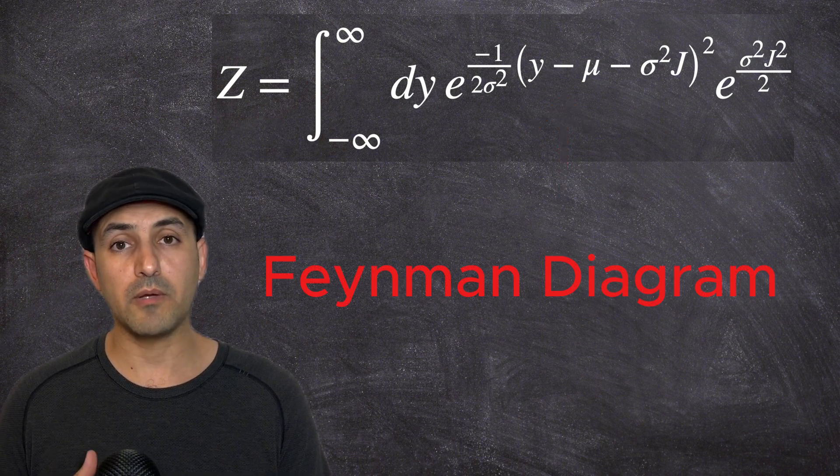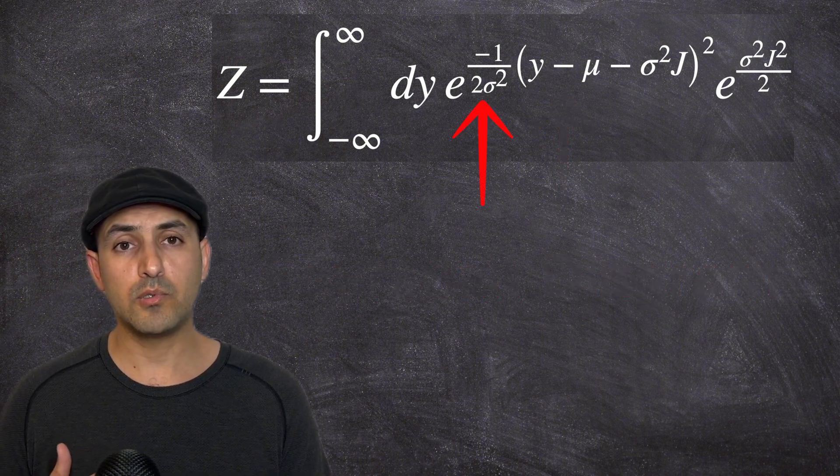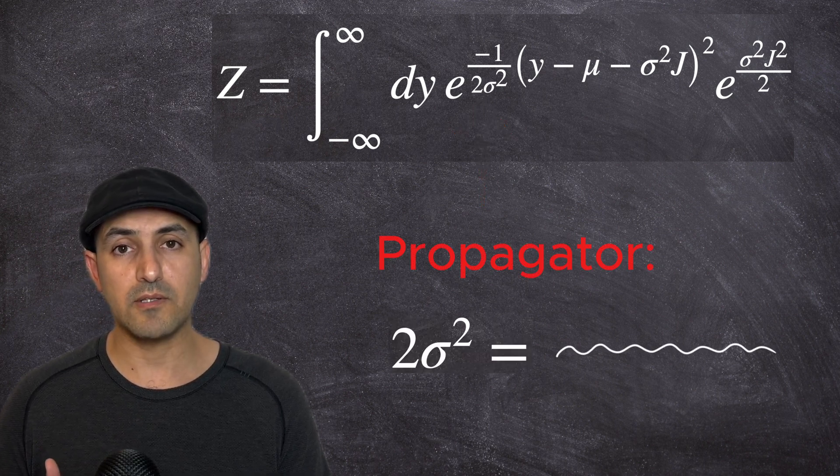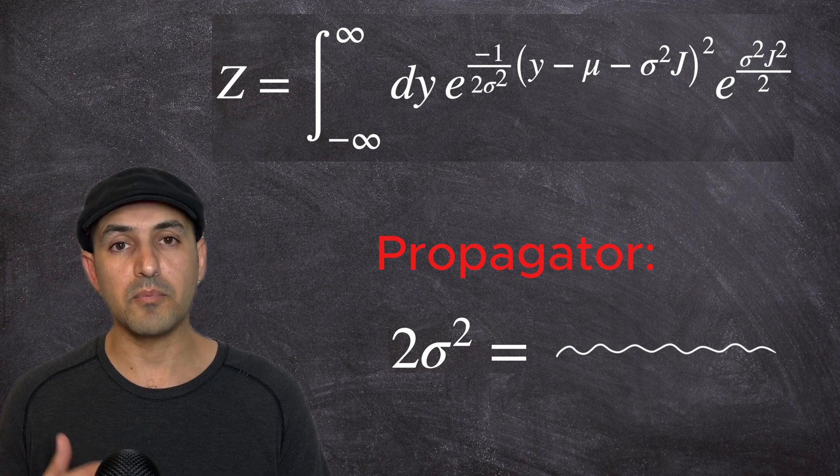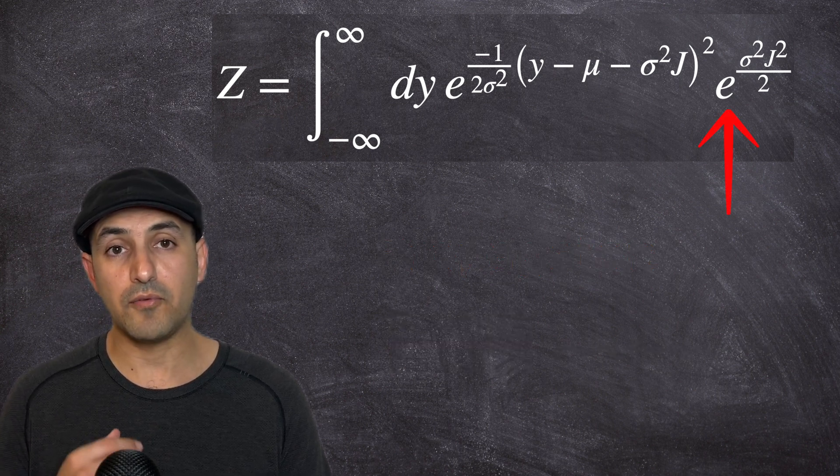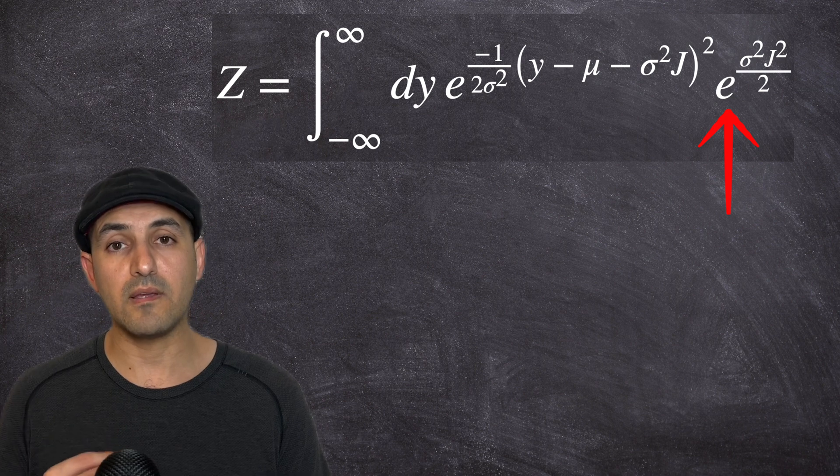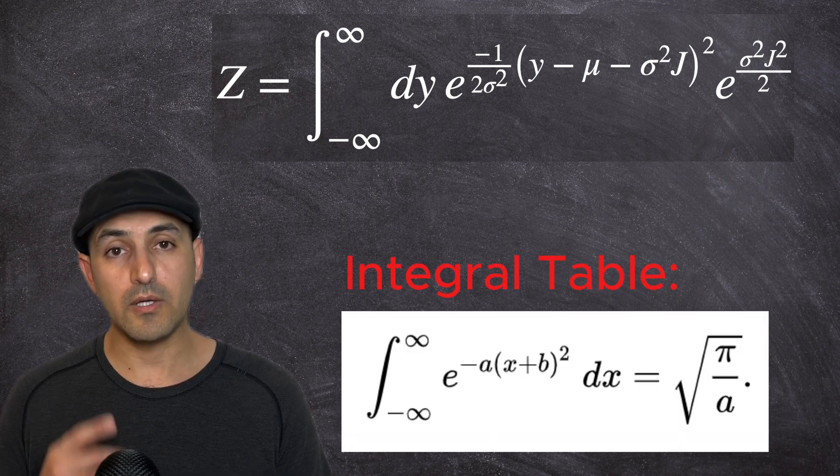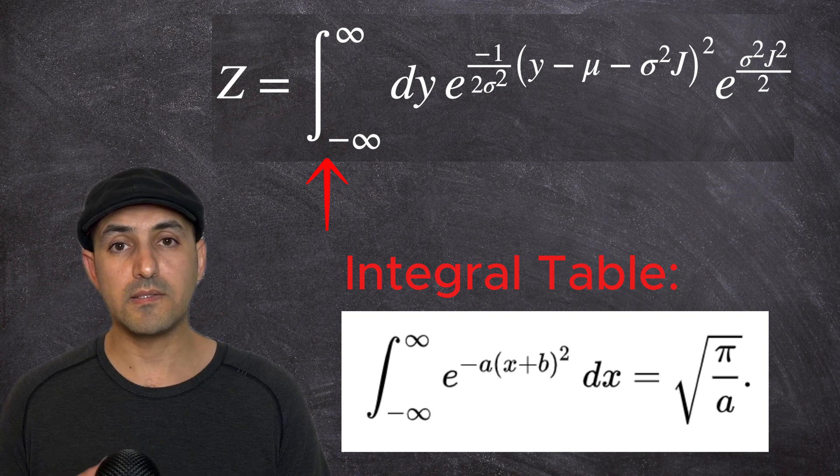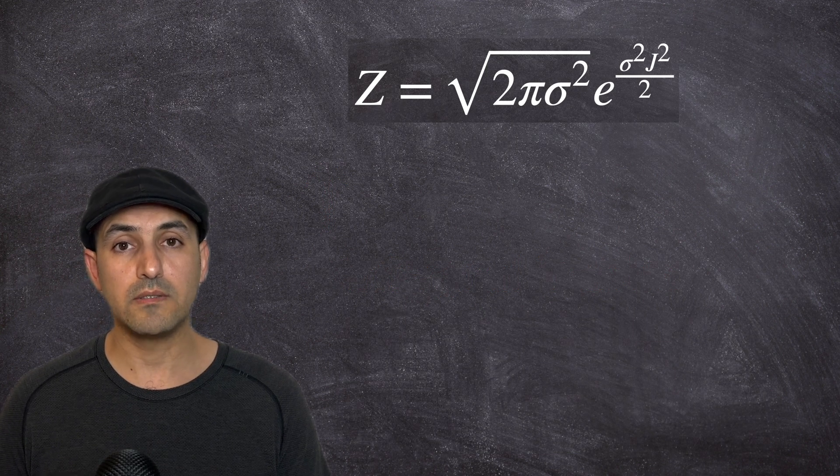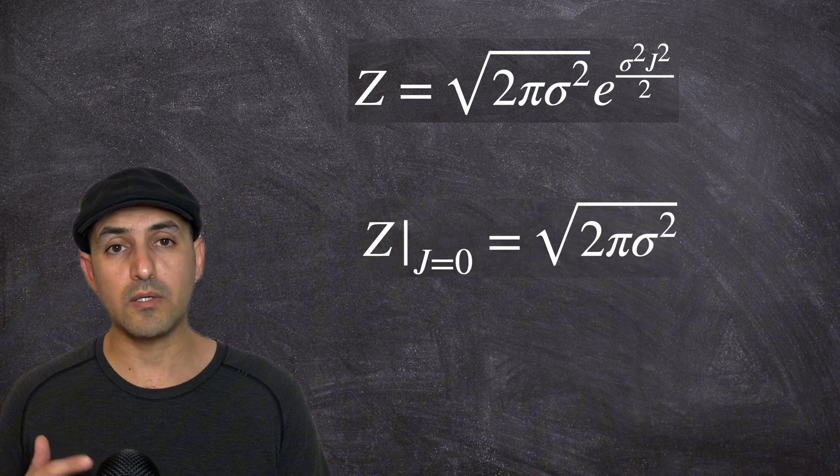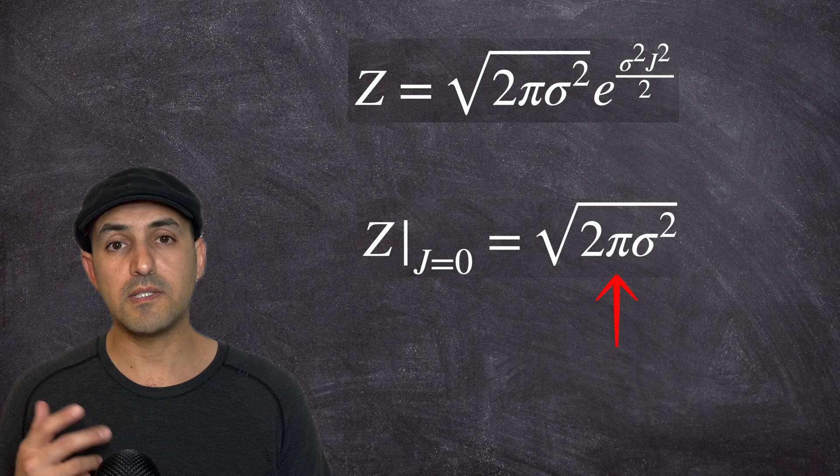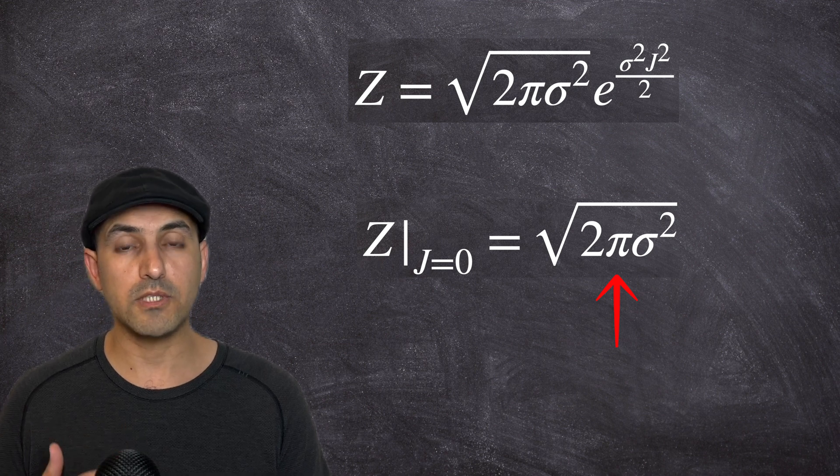Let me now add and subtract this term so that I have a complete square term for Y minus mu. In terms of Feynman diagrams, this two times sigma square is the propagator of the model and is represented by a line in the computations. This term is not a function of Y and I can take it out of the integral. And from the integral table, I know the answer to this integral. And here is the analytic solution for Z. If we set J equal to zero, the normalization factor comes out to be this, which is the familiar form from the Gaussian distribution.